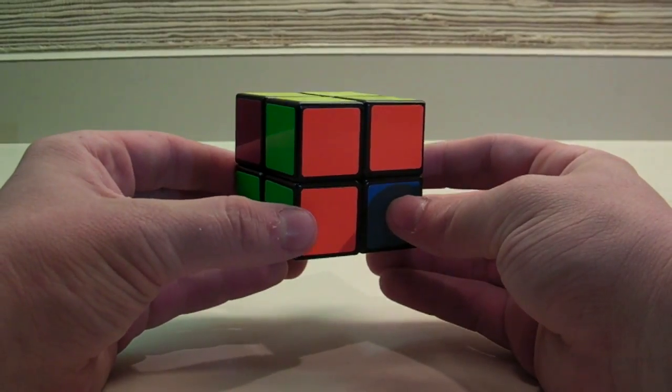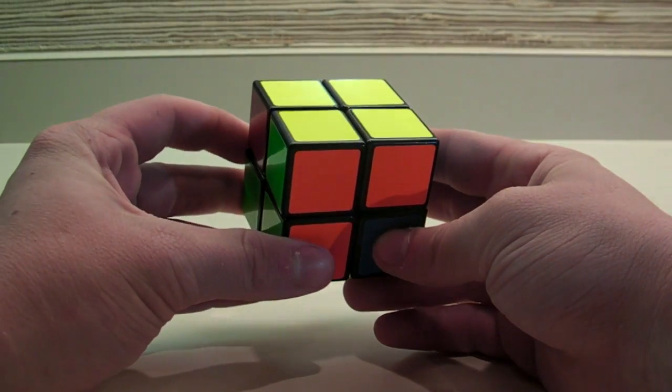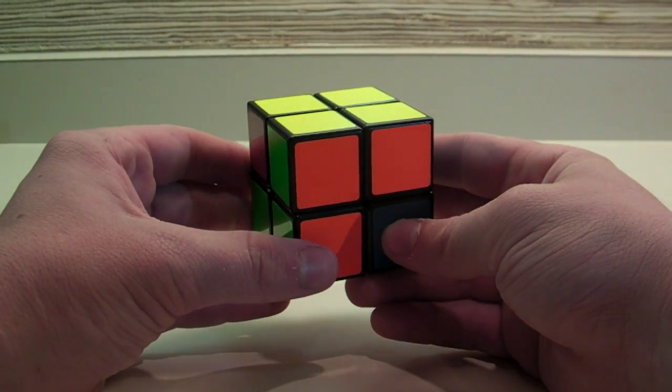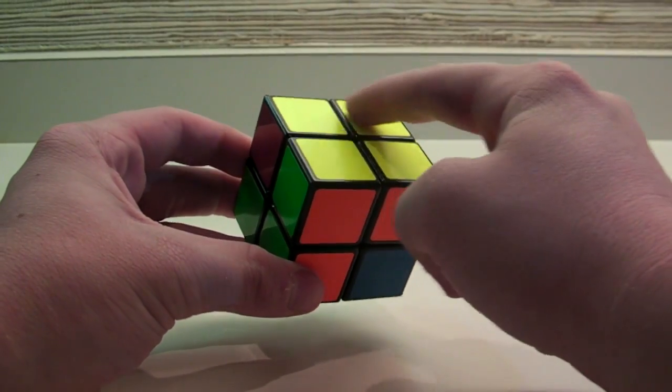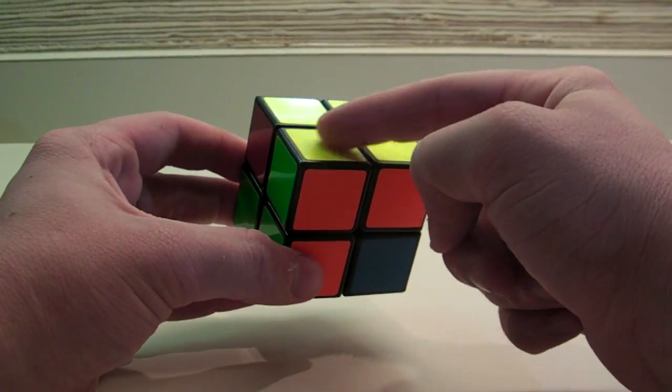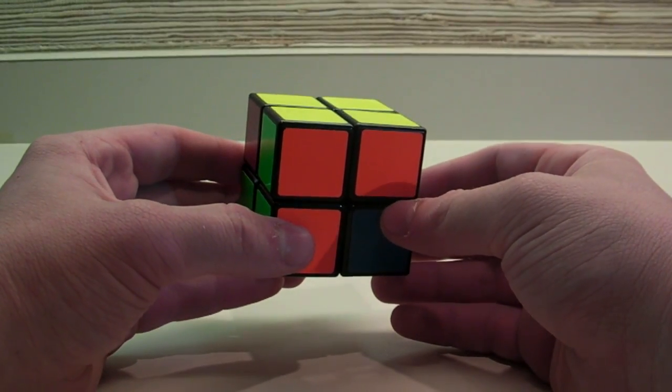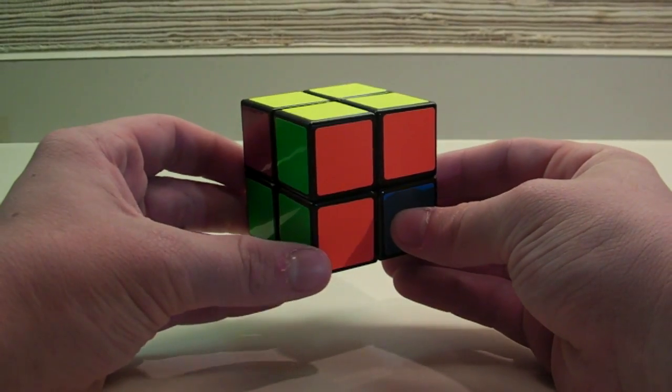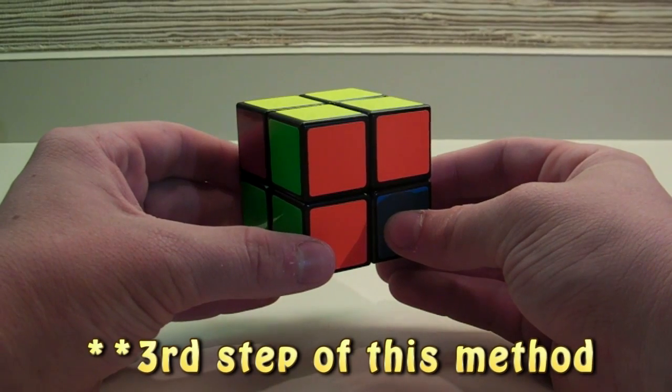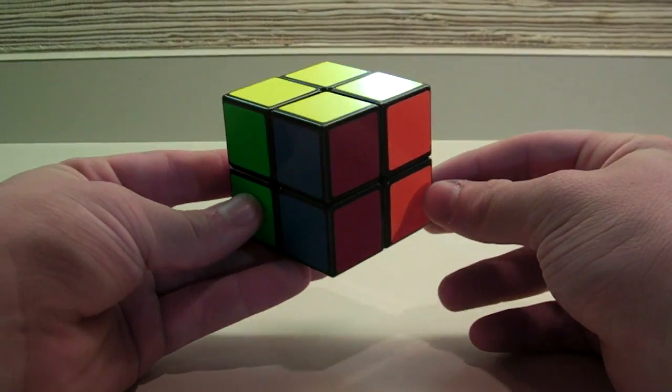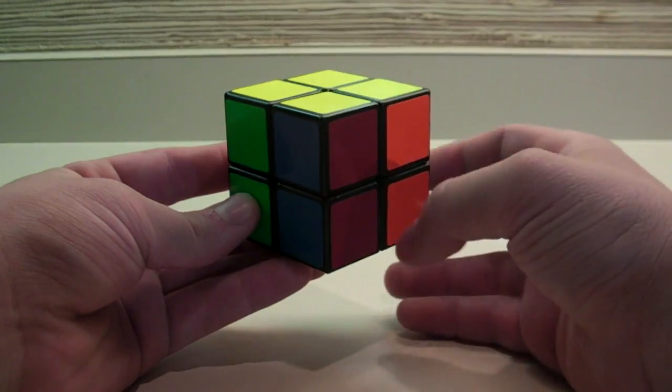What you want to do is recognize which case you have. For each layer, you can have one of three cases. The first one being where two adjacent corners need to switch. The second being where two opposite corners need to switch. And the last one where you need to switch none of them. For the third step of this algorithm, there is only five algorithms that you need to learn. The easiest one being where opposite corners need to be switched.